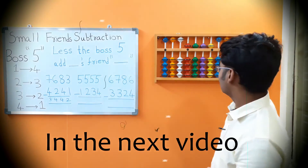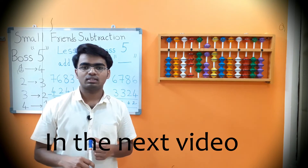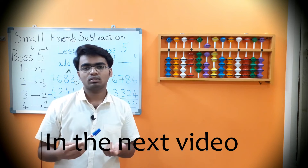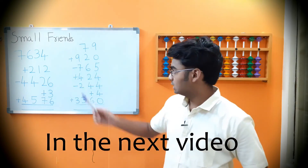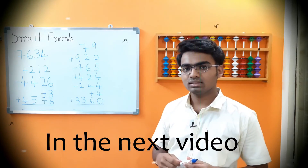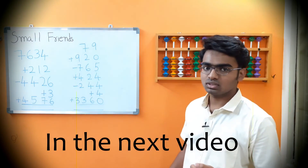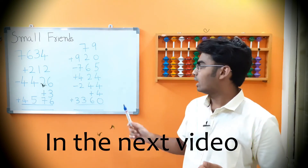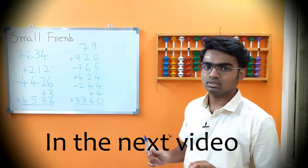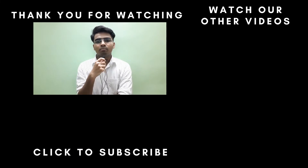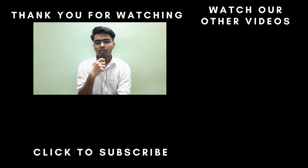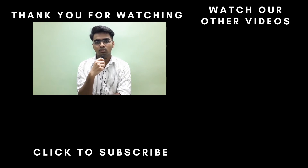This covers all the concepts — be thorough with these examples because if you can do this, you can do any small friends subtraction. Now let's also cover a 5-digit number subtracted from a 5-digit number, and zigzag subtraction, so this concept is very clear. These examples include both small friends addition and subtraction. Before watching the solution, pause the video and try to solve them on your own. If you know anyone who wants to learn abacus, please recommend my channel. If you've found value in this video, please like, share, and subscribe — thank you!